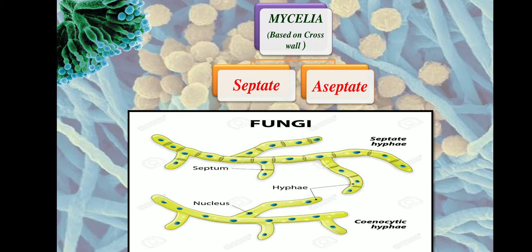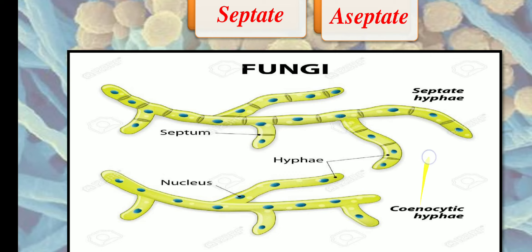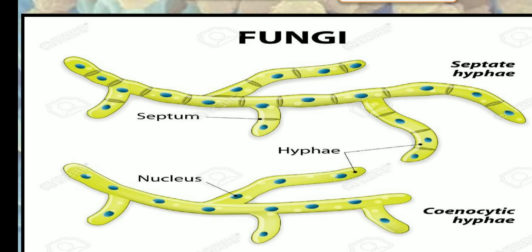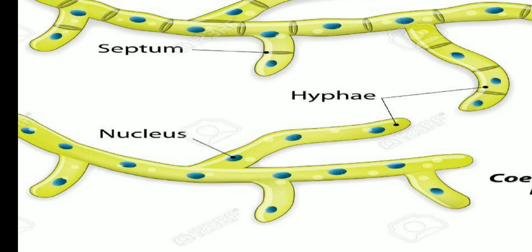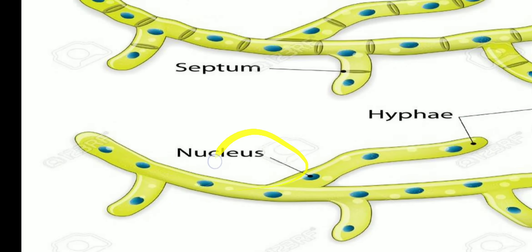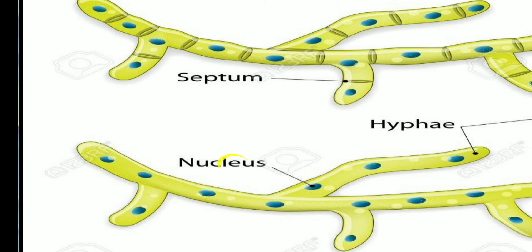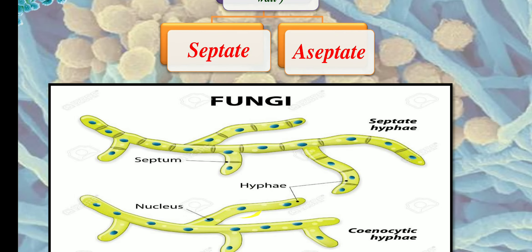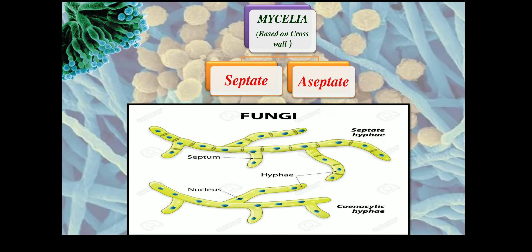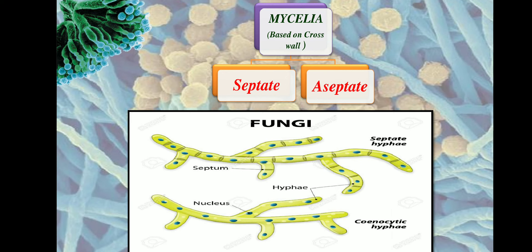The mycelium is a continuous mass. In aseptate hyphae, since there is no cross wall present, they appear as multinucleated hyphae.